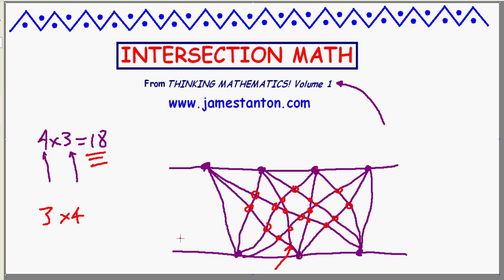Quick question. What's 3 times 4 in intersection math? Well, if you think about it, if I draw a diagram for it, it's going to be the same as this diagram, but upside down, so this has to be 18 as well. So in fact, in intersection math, it's pretty easy to see that a times b is still b times a.